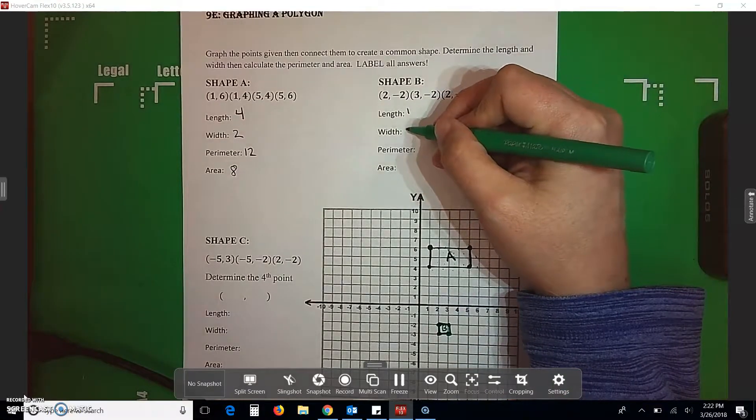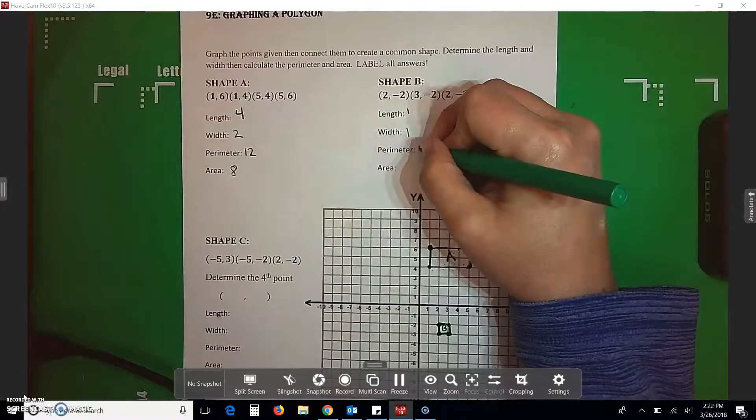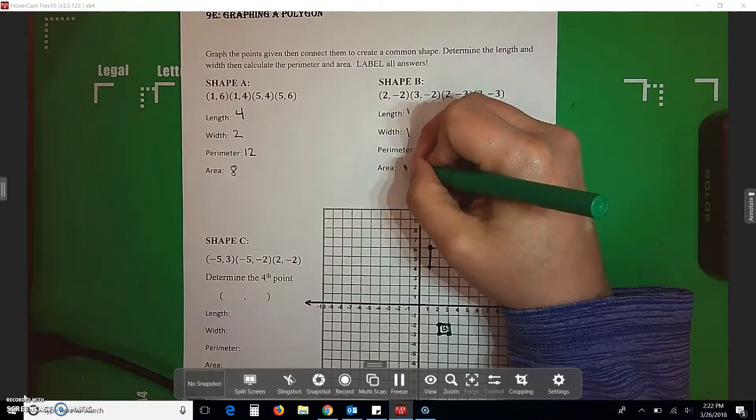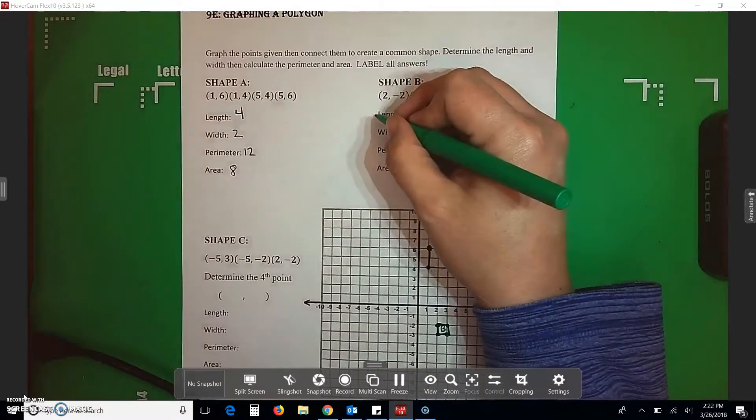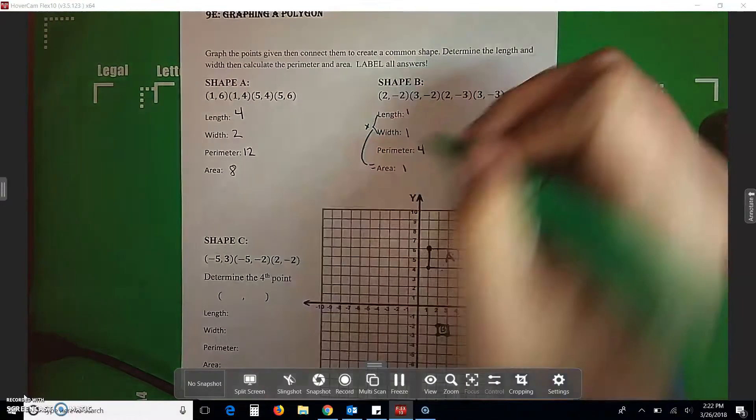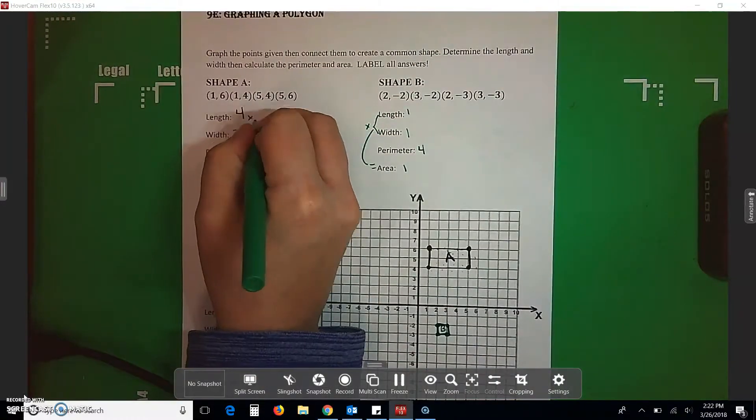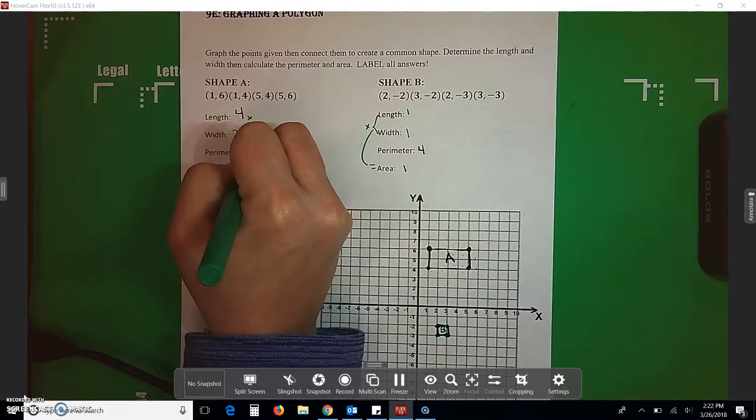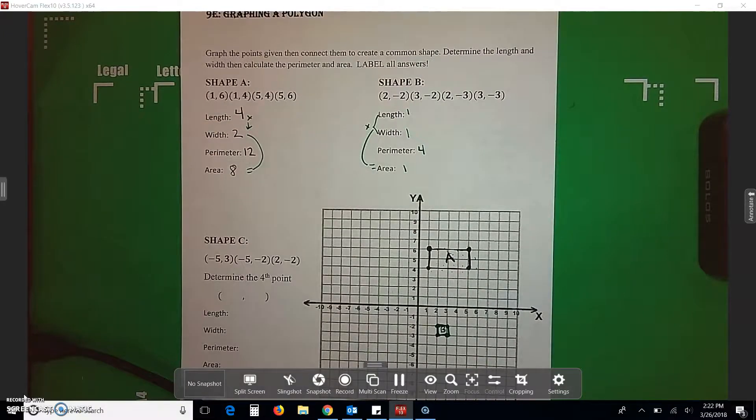We know our length is 1. Our width is 1. Our perimeter, all the way around, is 4. Our area is 1. Now, you notice, this times this equals this. This times this equals that. So, you don't actually have to go in and count all the boxes if you don't want to.